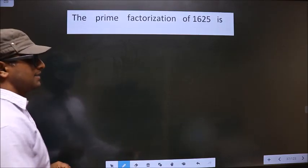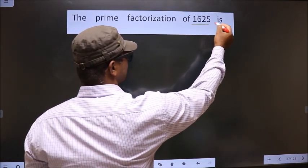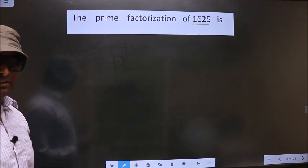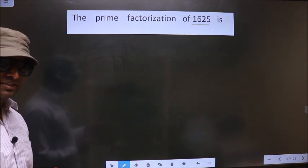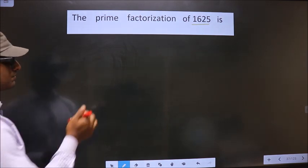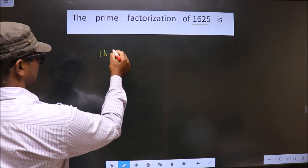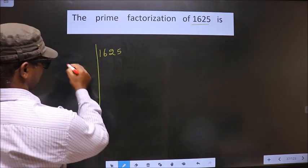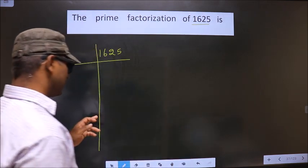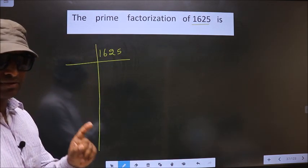The prime factorization of 1625 is, to do prime factorization, first we should frame it in this way. See, 1625. This is your step 1.